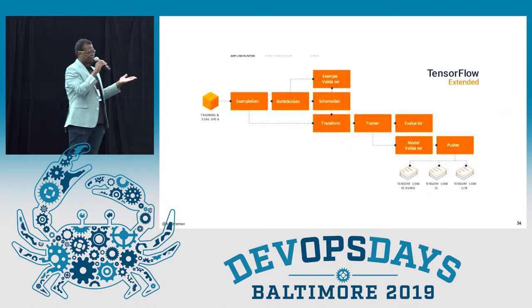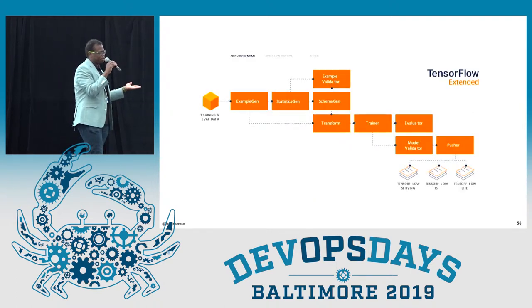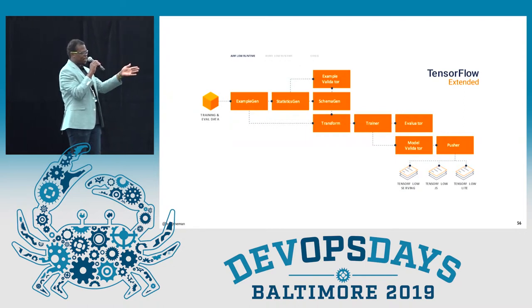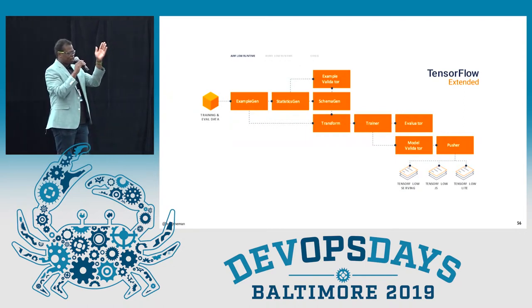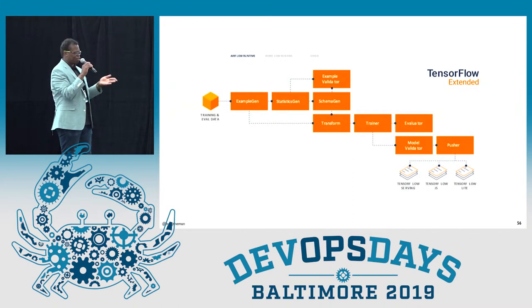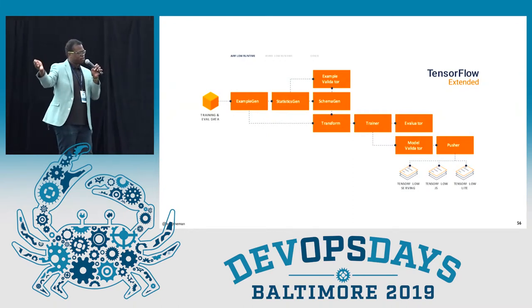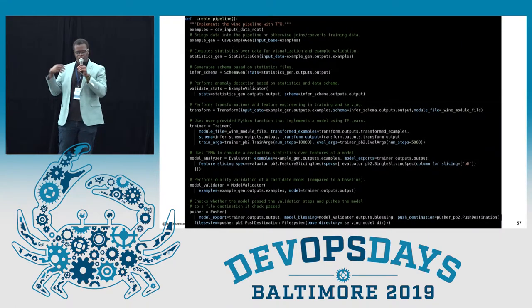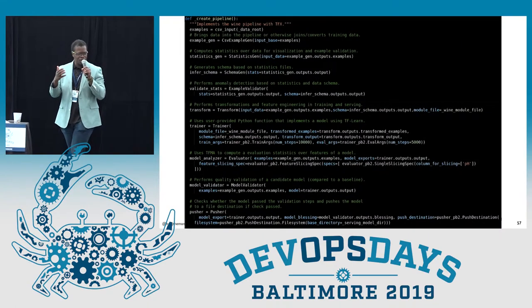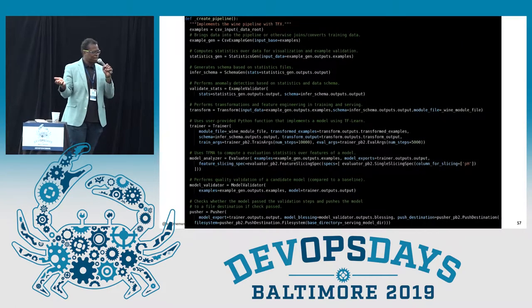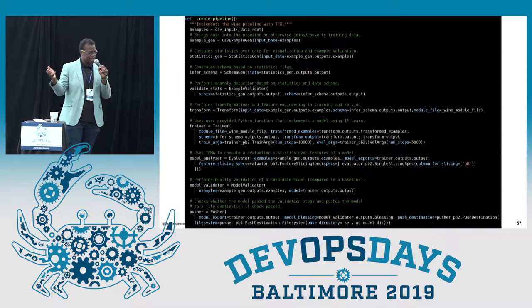Here's the whole TFX pipeline from start to finish — it uses everything from the example generator and goes all the way to the pusher, because the example generator is really the start so everything can be generated from that. And in 20 lines of code, this is pretty much the entire machine learning pipeline codified in TFX.